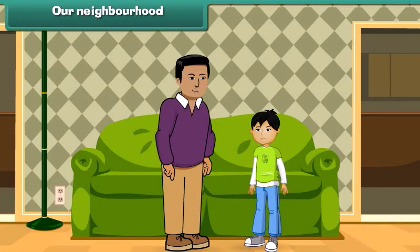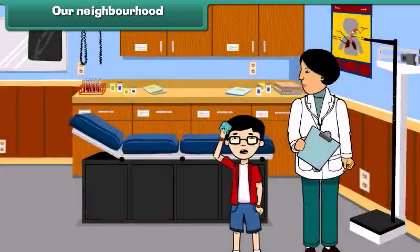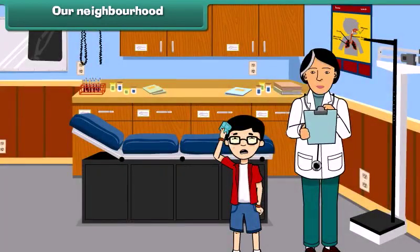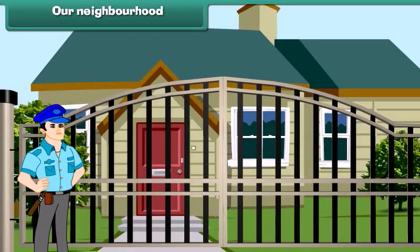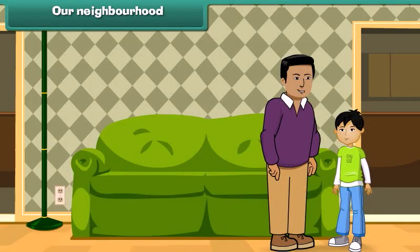Sam, we are human beings and we live in a society, and hence we need each other's help many a times. As you know, we need doctors when we fall ill, we need teachers to teach us, we need a watchman to keep our home safe. We get all this from our neighborhood. Son, now let's go outside and I will introduce you to some of the neighborhood places.